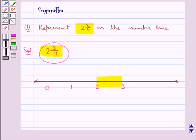Now we will show 3 upon 4 in this area on this number line. So to show 3 upon 4, we divide the gap between 2 and 3 into 4 equal parts.